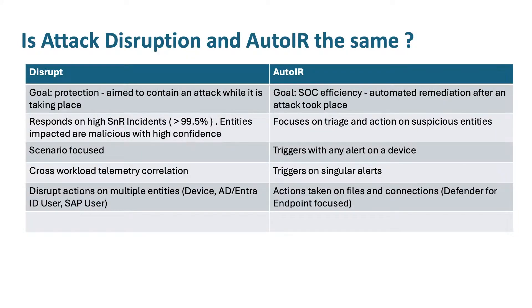We have in MDE automated investigation and response — how is that different to attack disruption? This is a very common question that customers and partners ask. Attack disruption and auto IR have a different goal and a different way of working. Attack disruption is aimed to contain an attack while it is taking place. Auto IR, on the other side, is more about SOC efficiency — it is about automated remediation after an attack has taken place.